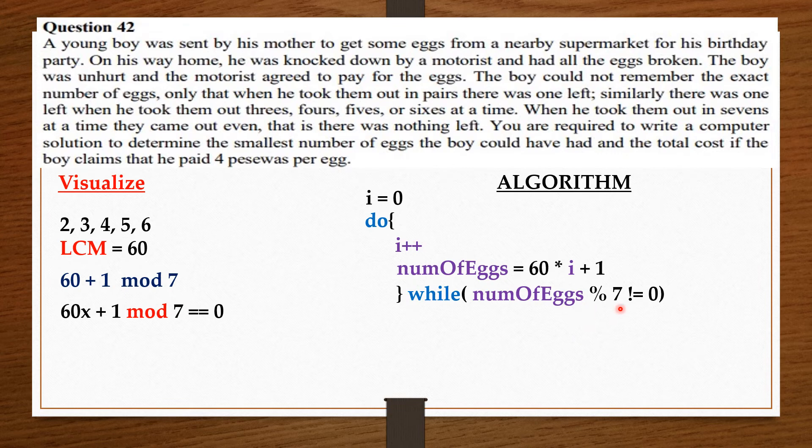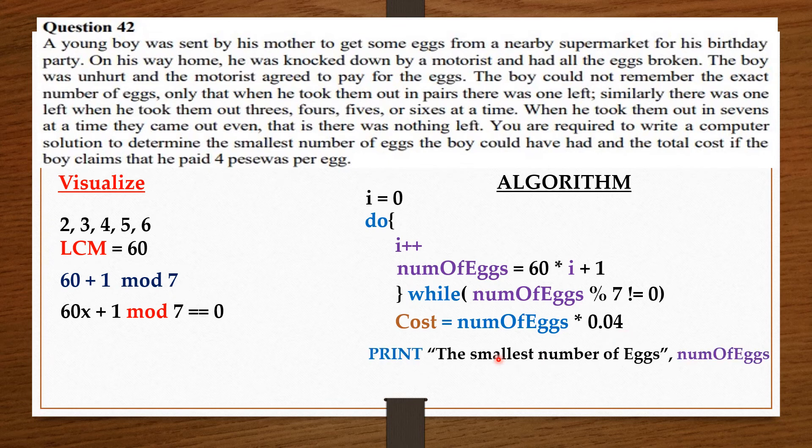Now, the moment the number of eggs modulo 7 becomes 0, this do-while loop stops. Then I compute for the cost, which is the number of eggs times the four pesos. Then I say print, the smallest number of eggs is the number of eggs we got, then the total cost is the cost.